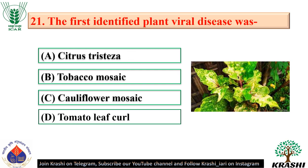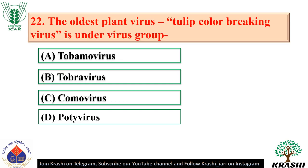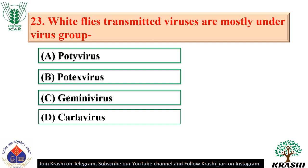Question number 21: The first identified plant viral disease was tobacco mosaic — option B. Question number 22: The oldest plant virus, tulip color breaking virus, is under virus group Potivirus — option D. Question number 23: Whitefly-transmitted viruses are mostly under virus group Gemini virus — option C.